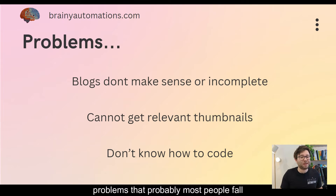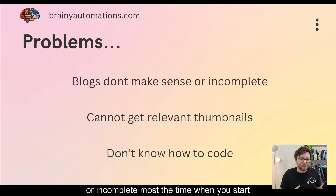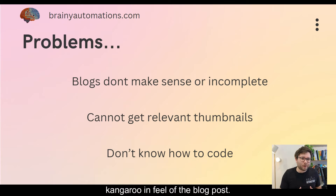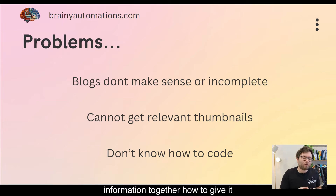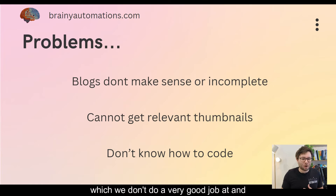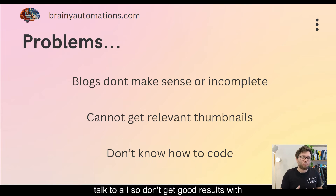Here are some problems that most people fall into. The blogs don't make sense or they're incomplete. Most of the time when we start thinking about automated blogs, we associate it with garbage because we don't know how to keep that congruent feel of the blog posts or how to match all the information together and give it relevant information. We also cannot get relevant thumbnails — we know blogging needs thumbnails and images, and we don't do a very good job at that because we don't know how to talk to AI.